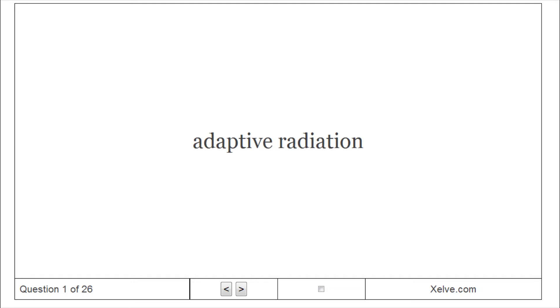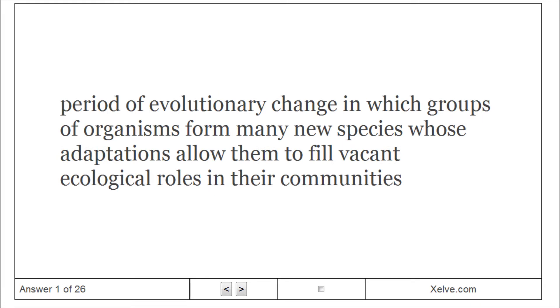Adaptive Radiation. Period of evolutionary change in which groups of organisms form many new species whose adaptations allow them to fill vacant ecological roles in their communities.